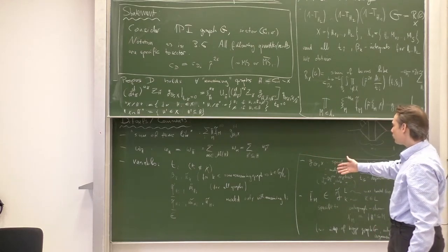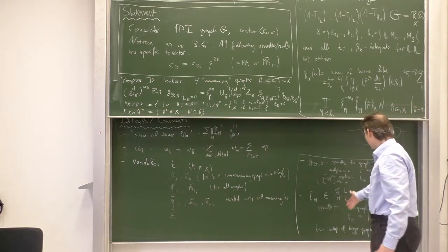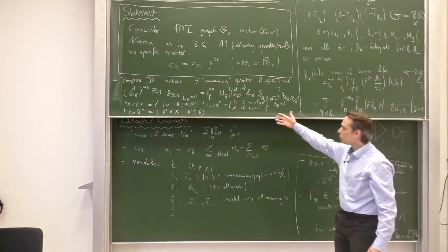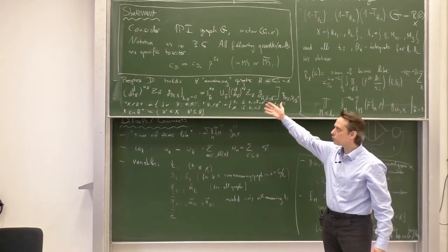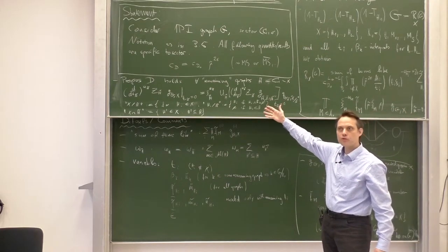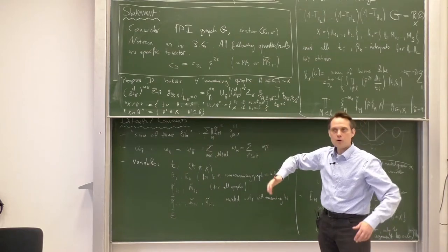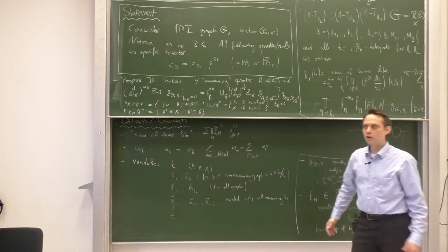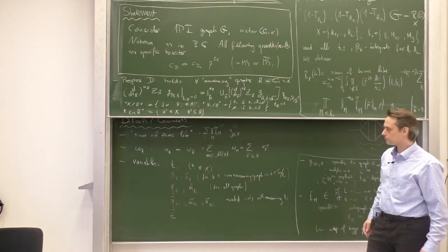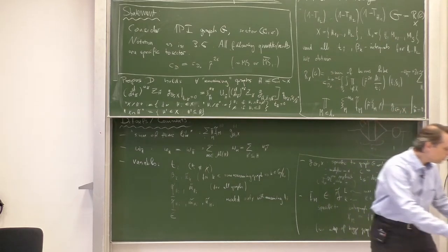We need to establish the variables, the measure, and the functions which appear. We will also need to establish that Proposition D holds at the next level so that we can carry out the next step in the proof.